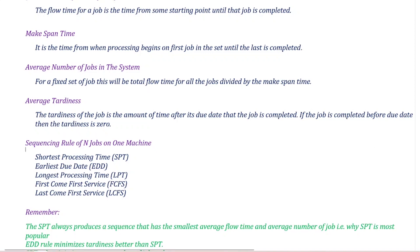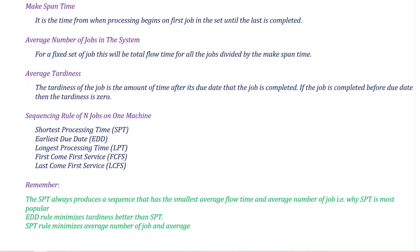The most important point from the exam perspective is that Shortest Processing Time (SPT) gives the lowest average flow time — you can compare all processes, this is one important point. At the end, the Earliest Due Date (EDD) is better if you want to minimize tardiness. If you compare SPT and EDD, this is the most important point. We will discuss all these concepts in detail.